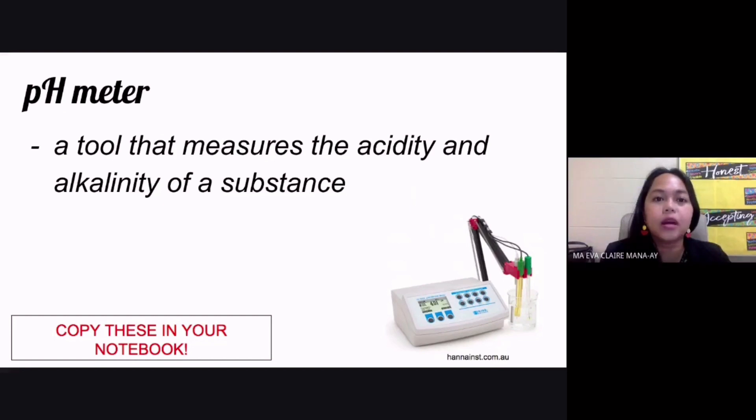The first thing that we have here is a pH meter. A pH meter is just a tool that measures the acidity and alkalinity of a substance. Simply said, it measures how acidic or how alkaline a substance is.